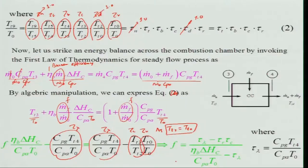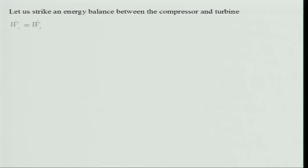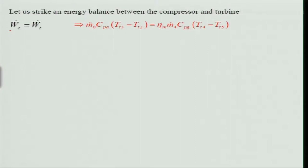This expression for f is more complex than the ideal case, with many more terms. However, when η_b = 1 you recover the ideal cycle formula — that is the crux of this analysis. If you know the real cycle formula, you can easily obtain the ideal cycle as a special case.